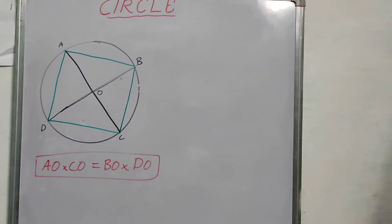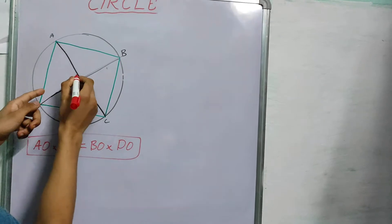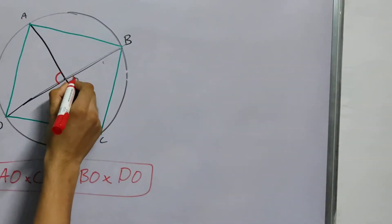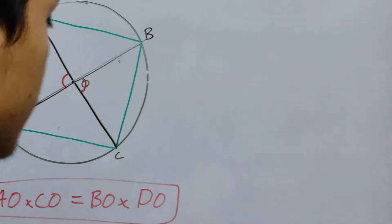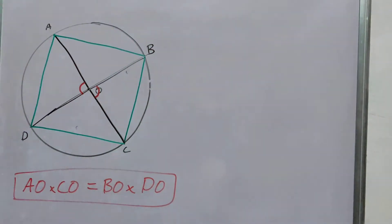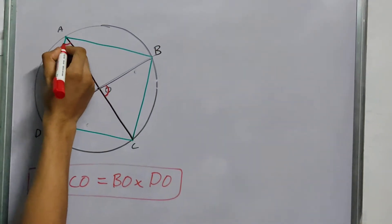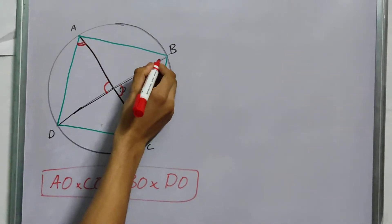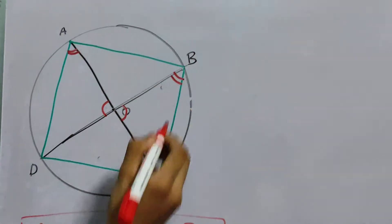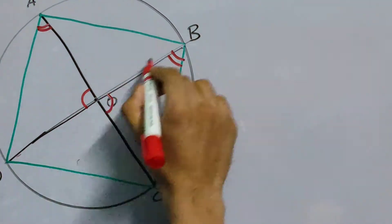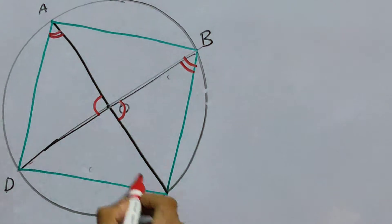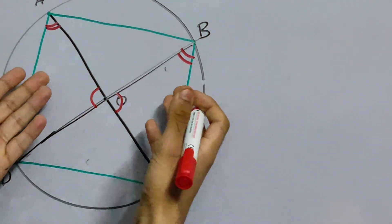This angle will be obviously equal to this one, angle AOD equals angle BOC, vertically opposite angles, and these two will also be equal. If you draw this part, DC, and this one, then these two will be equal.